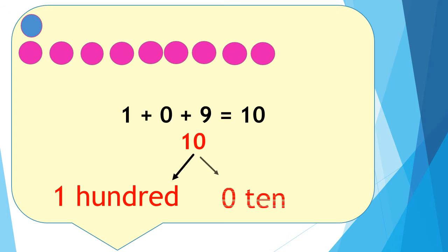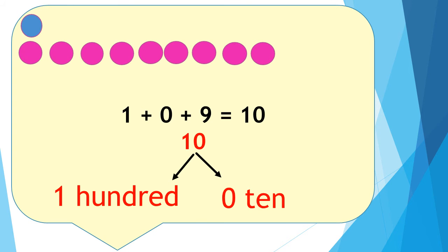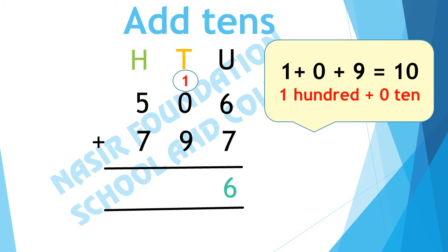Counting 1, 2, 3, 4, 5, 6, 7, 8, 9, 10. If we add 1, 0 and 9 we get 10. In 10 there is 1 hundred and 0 tens. In 10 tens there is 1 hundred and 0 tens. If we add 1, 0 and 9 we get 10 tens. If we add 10 tens there is 0 tens and 1 hundred. We will write 0 in tens column and we will carry forward 1 to the hundreds.